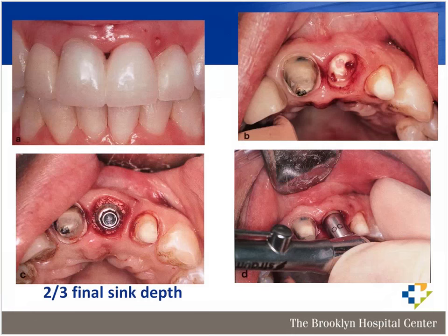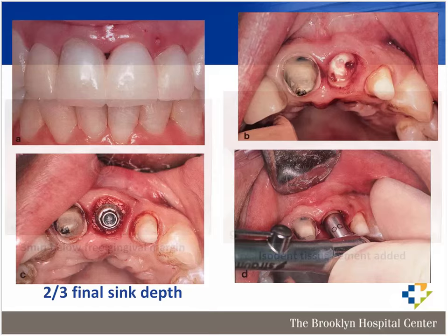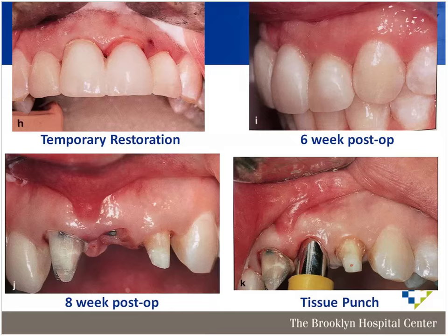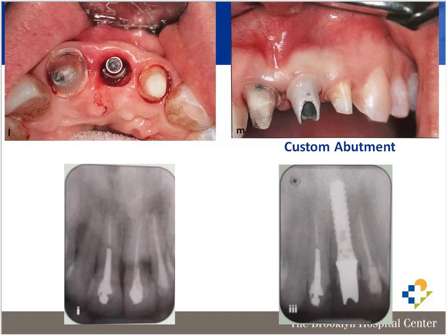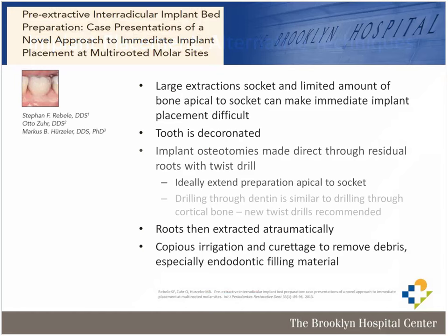For immediate temporization: start with an atraumatic extraction, place the implant palatally 1.5 to 2 millimeters from a line drawn tangentially to the labial aspect of the teeth, secure the implant 3 millimeters apically, place the graft, then place your pre-made abutment and temporary restoration. This technique gives a nice contour to the gingiva with no gingival recession, and there is good literature to support it.